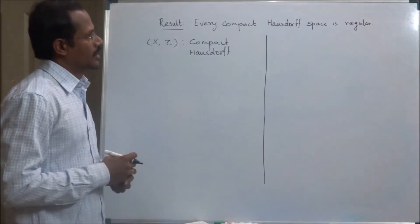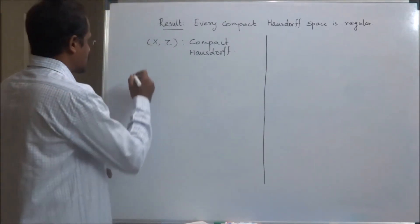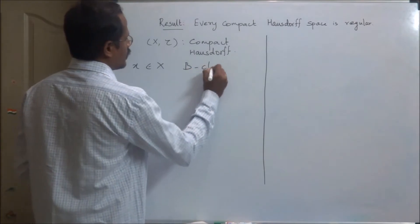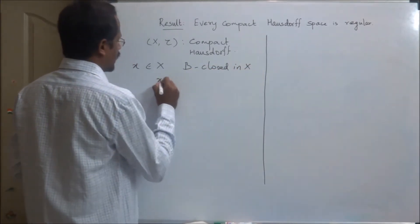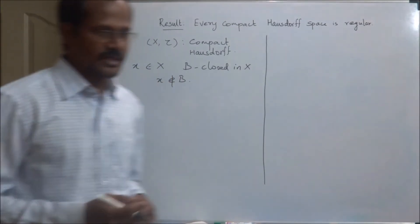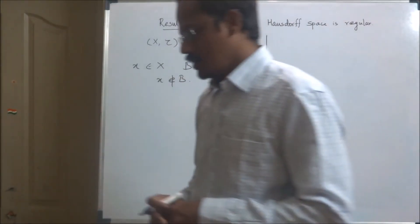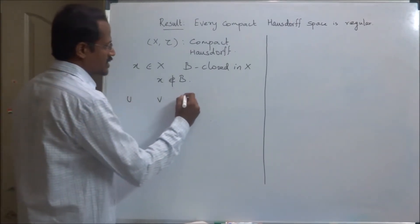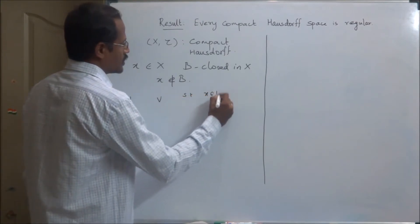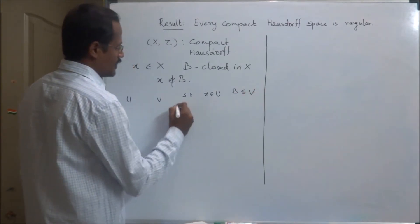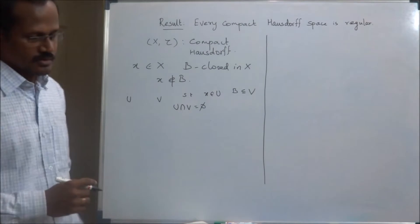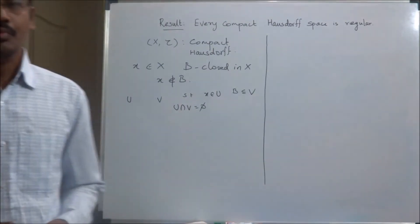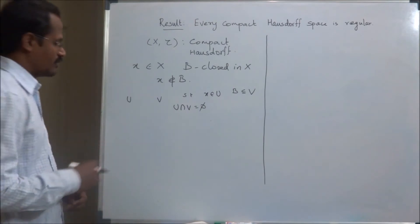To prove that the space X is regular, we start with an arbitrary point x and a closed set B with the condition that x is not in B. So B is a closed set in X which does not contain the point x. Our aim is to identify two open sets U and V such that x is in U and B is contained in V, so that U ∩ V is empty — we need to identify two disjoint open sets U and V, U containing x and V containing B.